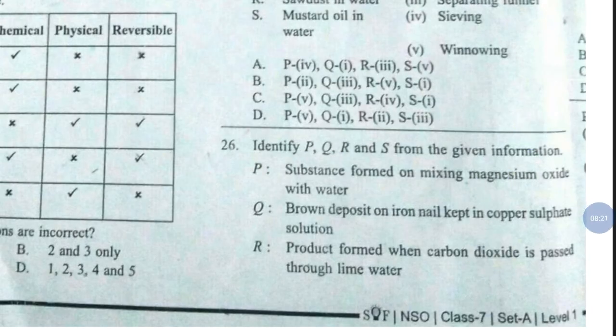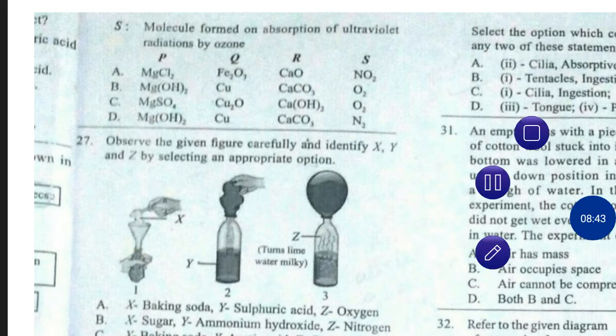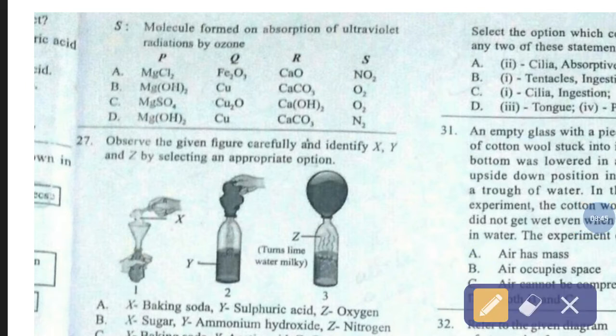Question number 26. Identify P, Q, R and S from the given information. P: substance formed on mixing magnesium oxide with water. Q: brown deposit on iron nail kept in copper sulfate solution. R: product formed when carbon dioxide is passed through lime water. S: molecule formed on absorption of ultraviolet radiations by ozone. The correct answer is option number B.